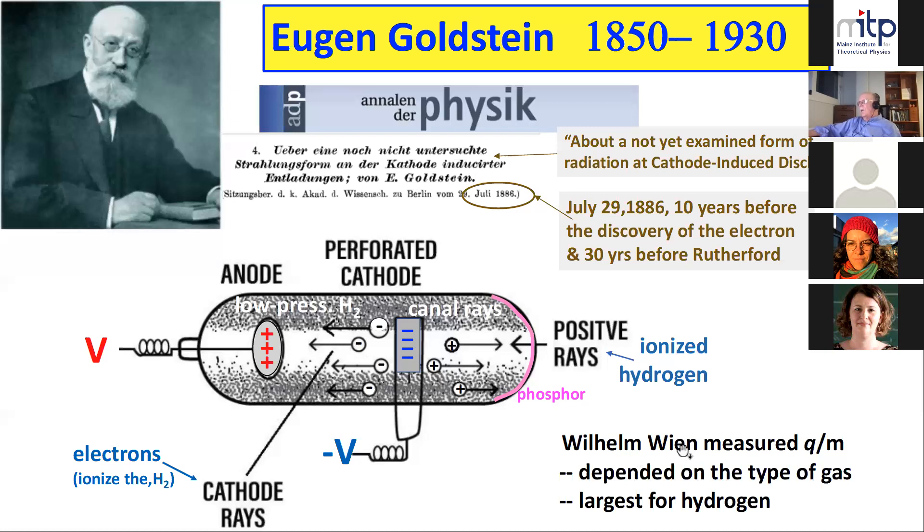His associate, William Wien, of the Wien displacement law, took the apparatus and put a magnet here and measured the charge to mass ratio. He measured the charge to mass ratio for hydrogen, and that's the value we know today within some error. So Goldstein and Wien were the first people to see protons. But they didn't know about electrons and didn't know about the Rutherford atom. Rutherford knew about electrons and the Rutherford atom, so he gets credit for discovering protons, but he wasn't first.